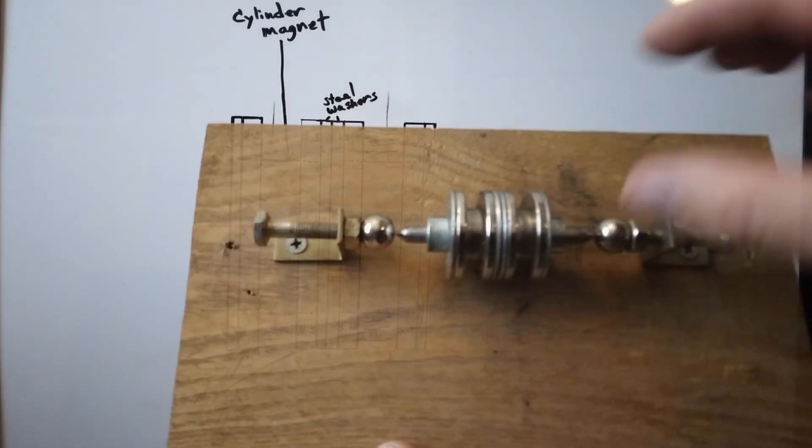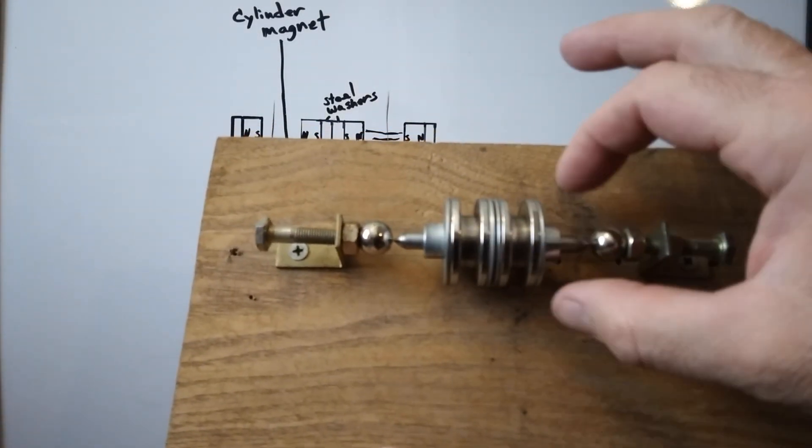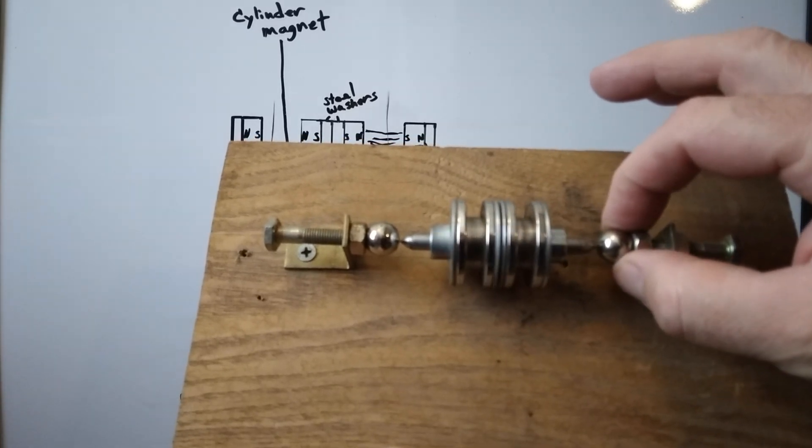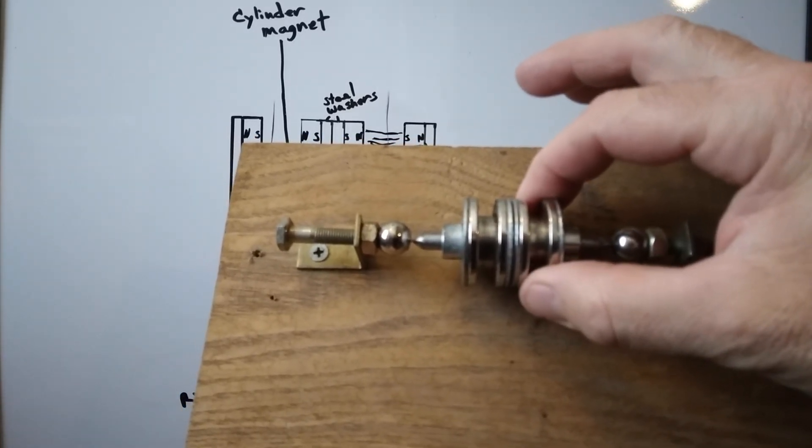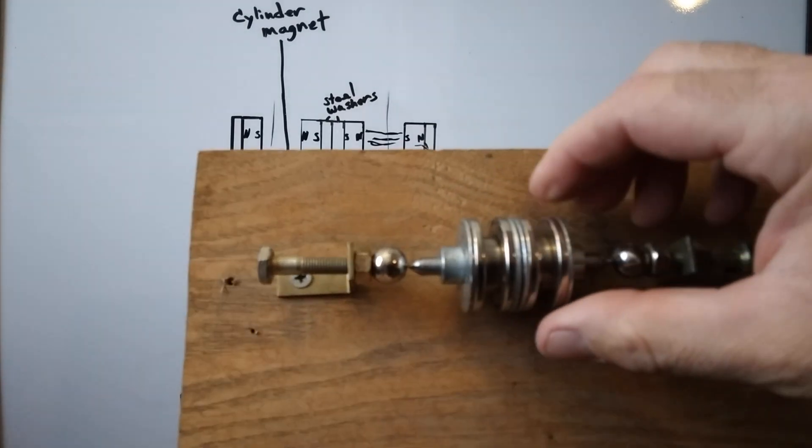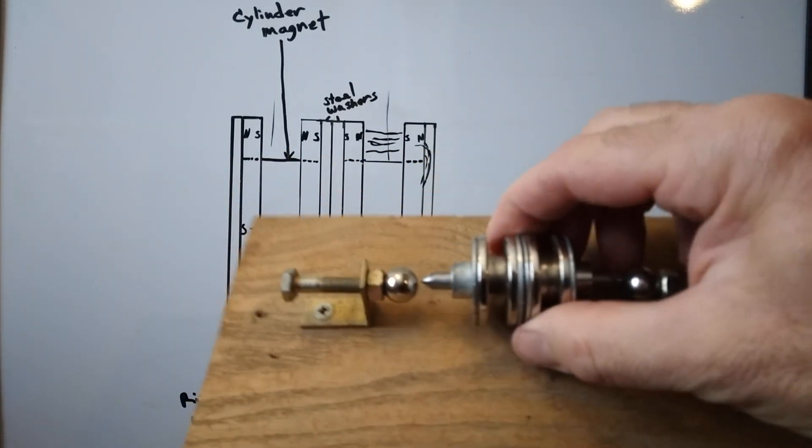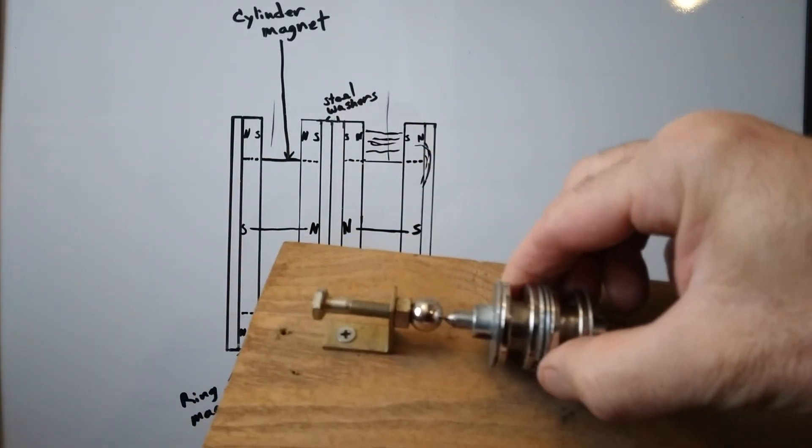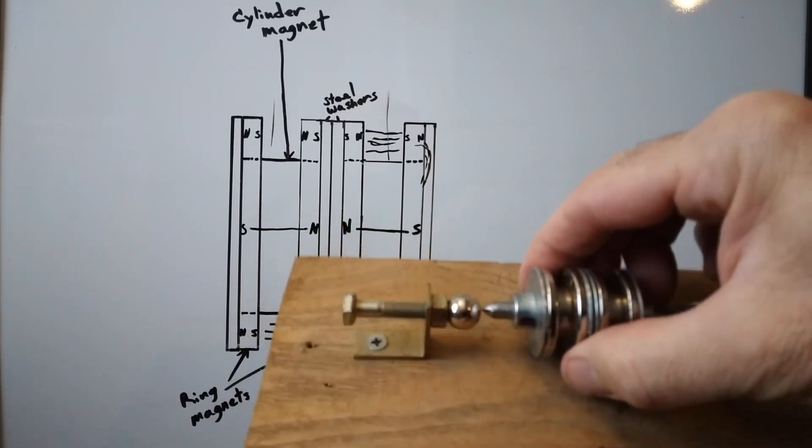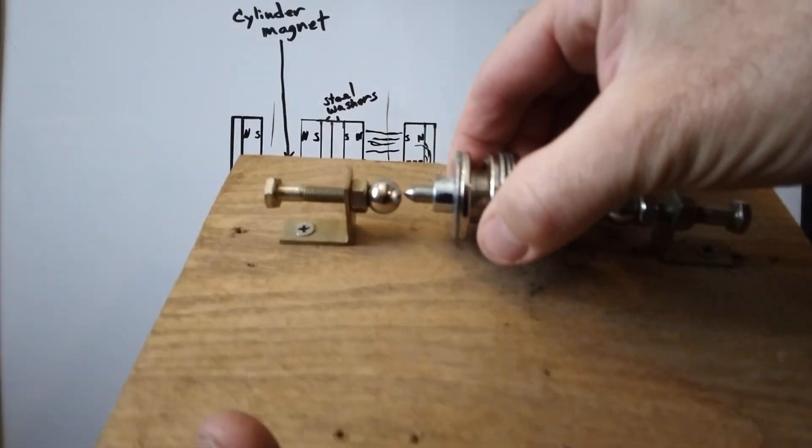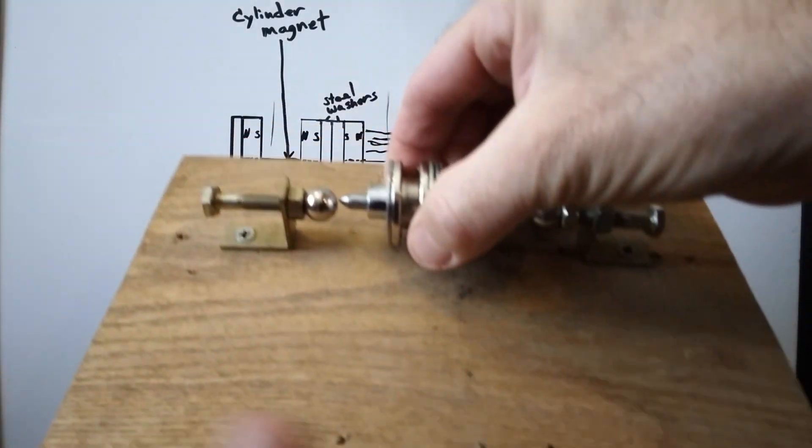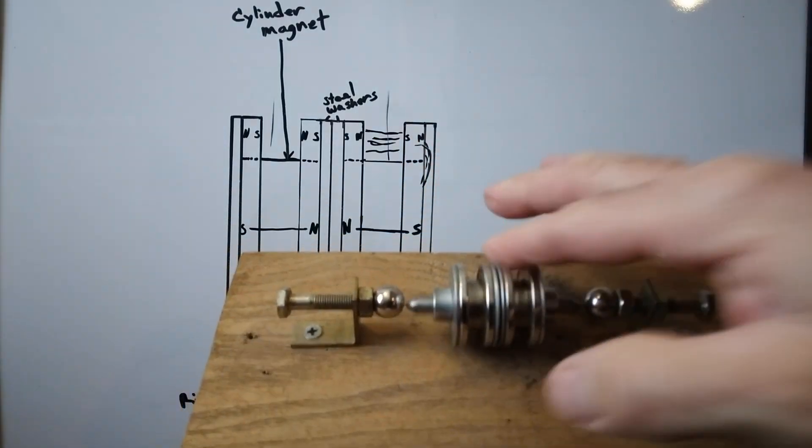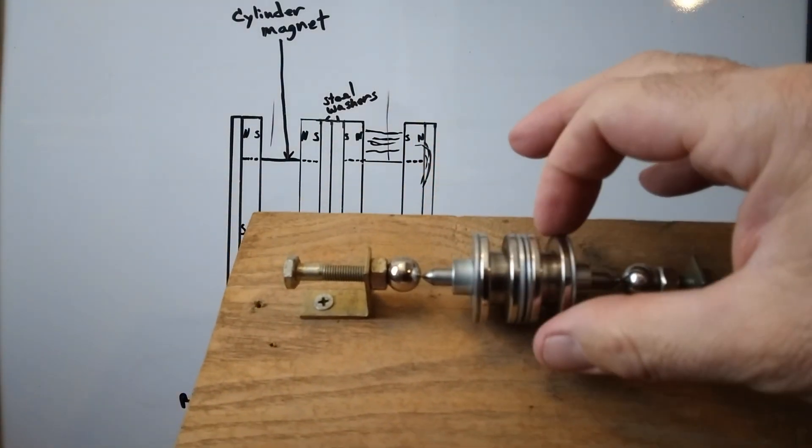And with the rotor stuck in between these two sphere magnets, it just kind of floats right in there. This rotor weighs a third of a pound. These magnets hold it in there really good. I can actually lift that piece of wood up right on there because it's locked right in there.